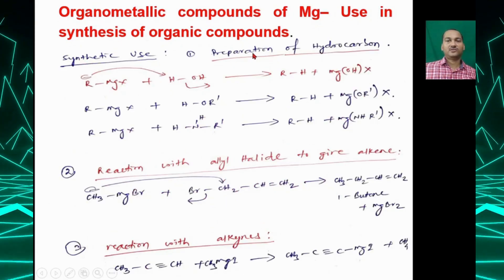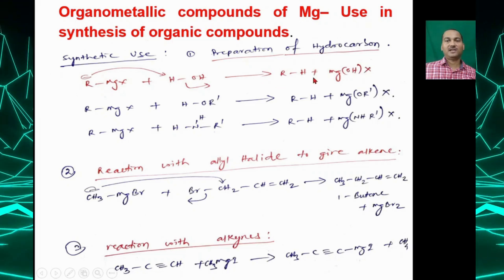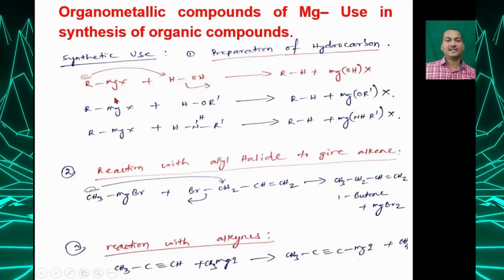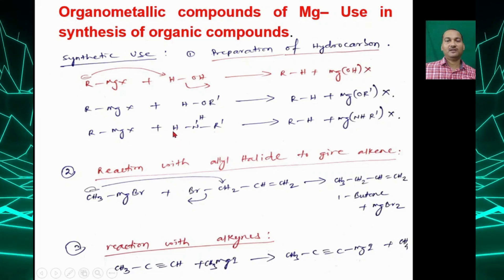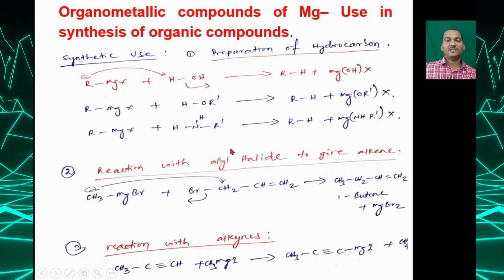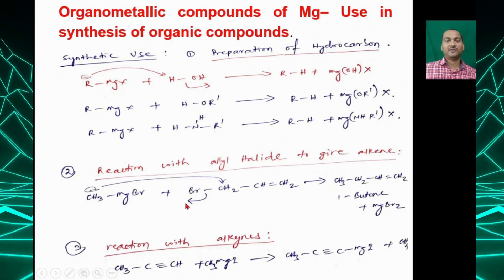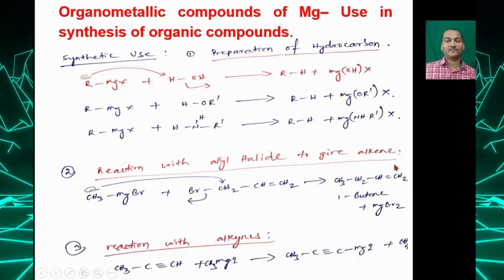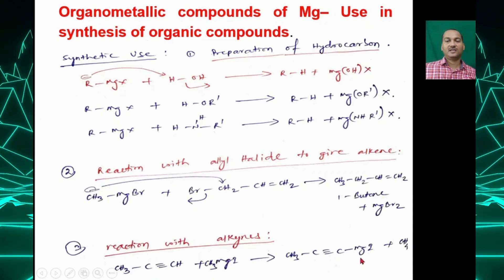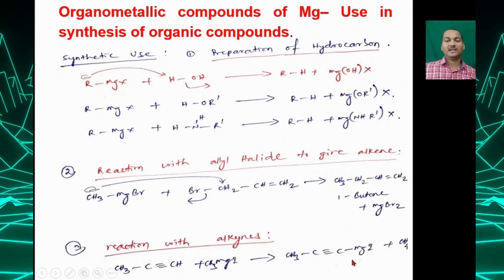The first synthetic use is preparation of hydrocarbons: RMgX plus water gives RH plus MgOHX. Grignard reagent can also react with alcohol or amine to give hydrocarbon RH. With an allyl halide, the CH₃⁻ attacks the CH₂ and kicks out Br⁻, giving an alkene. Grignard reagent can also react with alkynes to give an acetylene Grignard reagent.